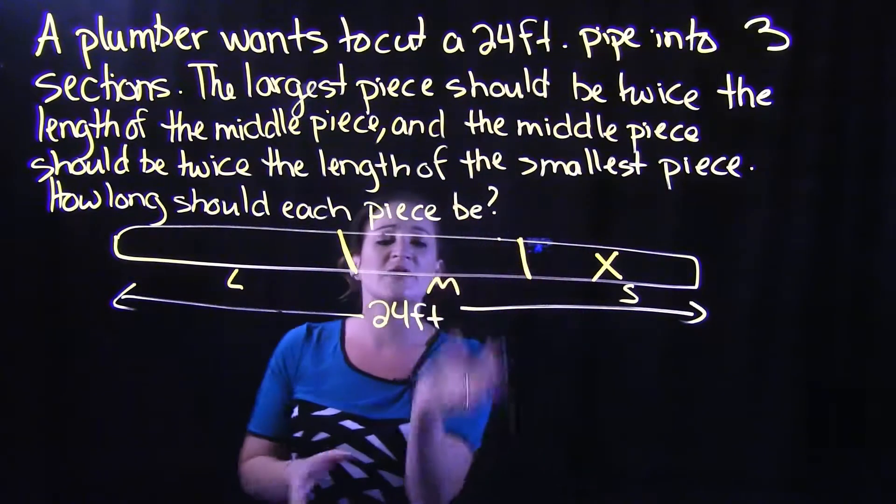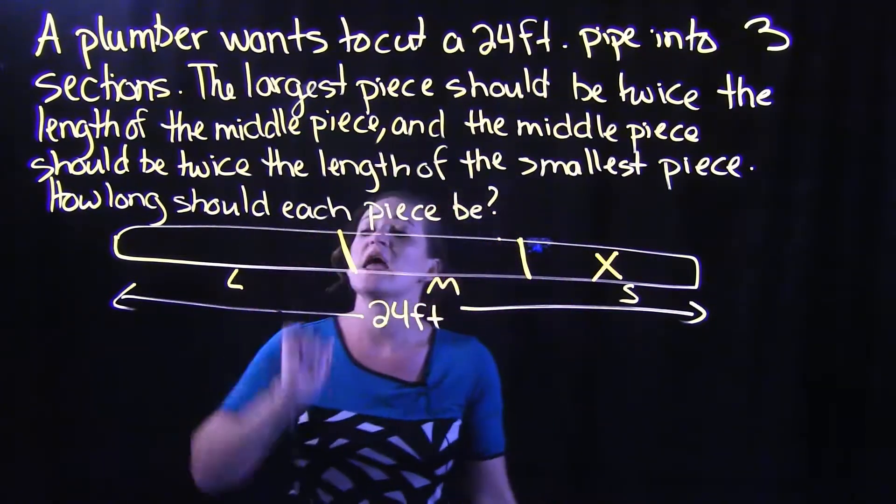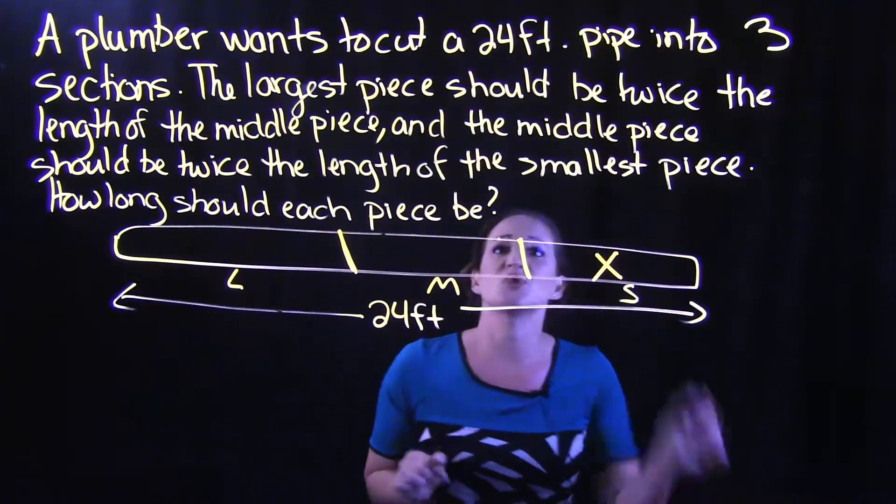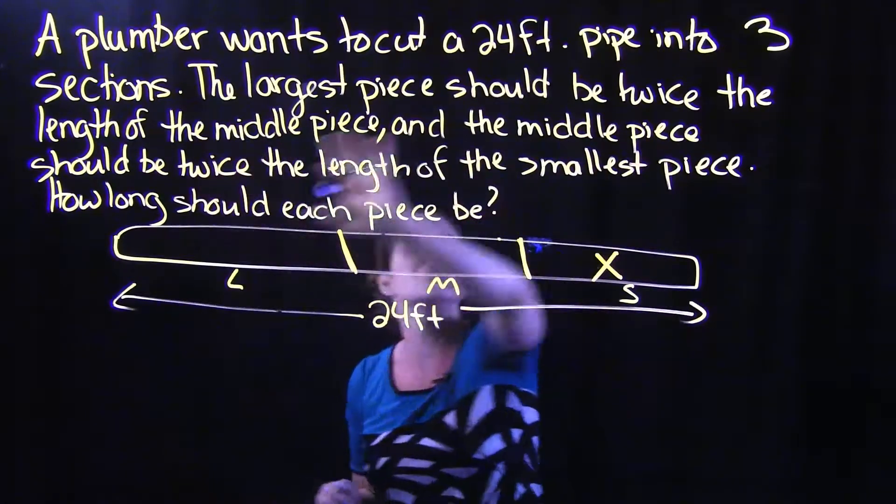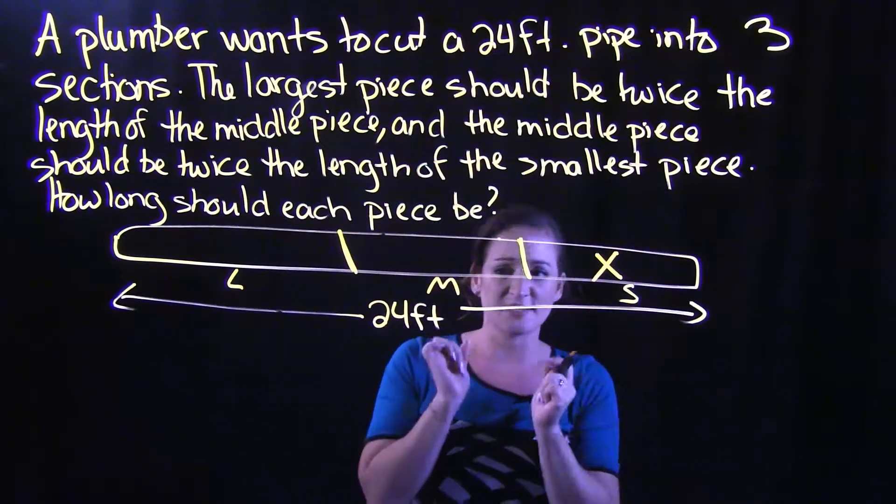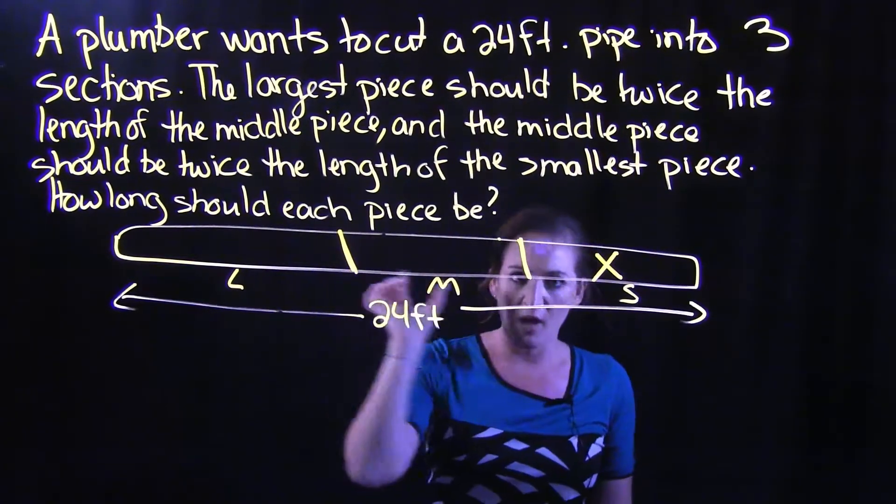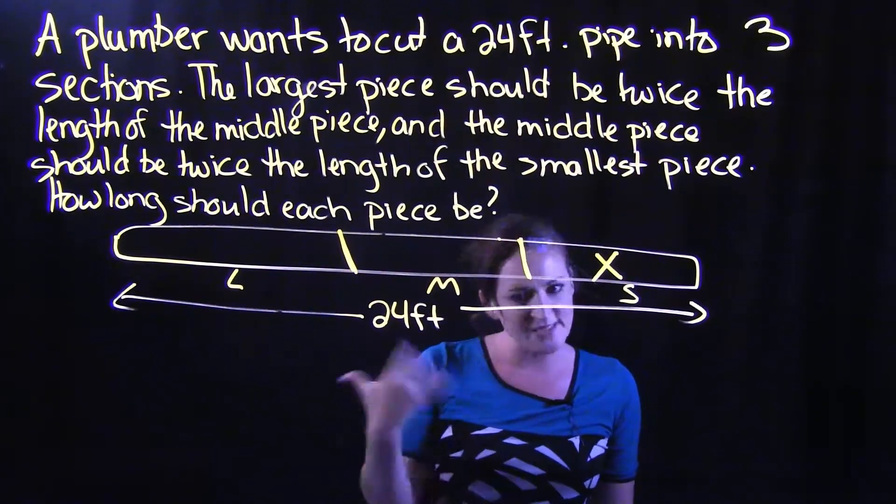So talking about the middle piece, it says the middle piece should be twice the smallest. So this middle piece has to be double what this small piece is. Now the small piece is X.